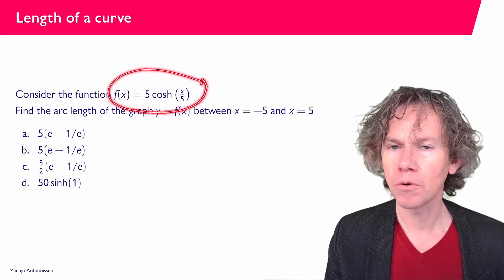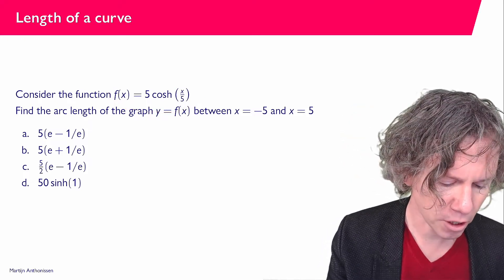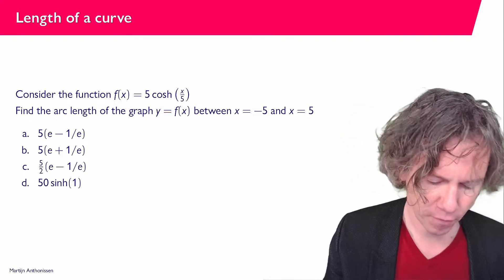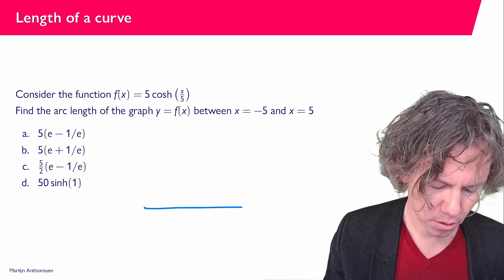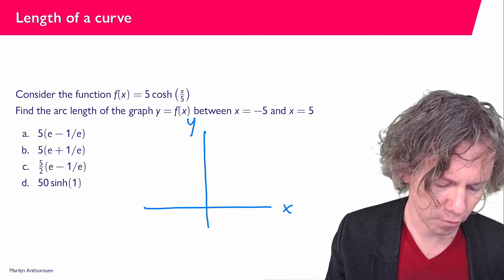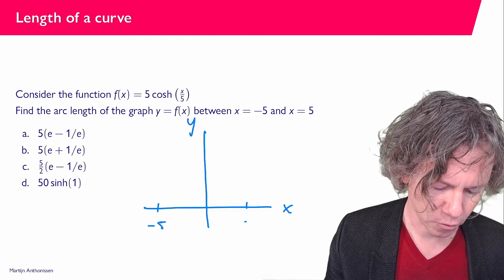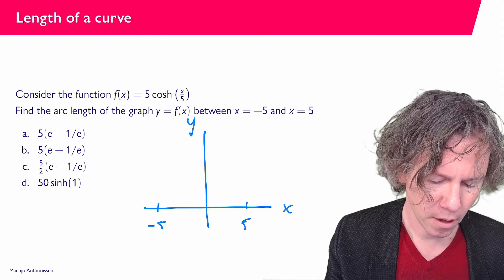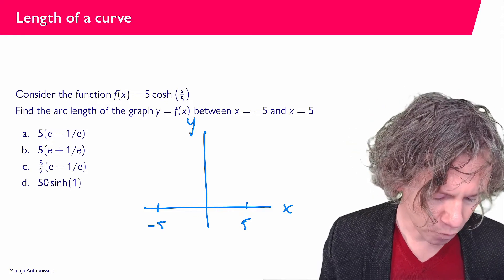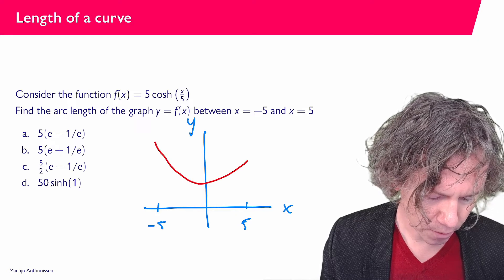As you may recall, this is the shape of a hanging chain. So if I make a sketch, we have a horizontal axis, a vertical axis. We go from minus 5 up to 5. And then if you would sketch the graph, you would find something that looks approximately like this.